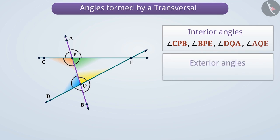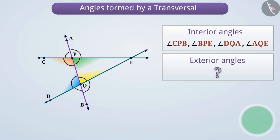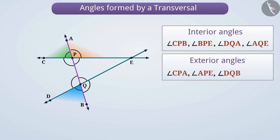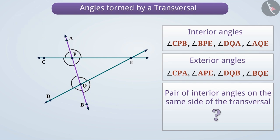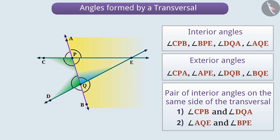Similarly, can you find out the exterior angles? The exterior angles formed by the transversal AB are angle CPA, angle APE, angle DQB, and angle BQE. Now, can you find out the pair of interior angles on the same side of the transversal? The pair of interior angles on the same side of the transversal AB is angle CPB and angle DQA, and the other pair is angle AQE and angle BPE.